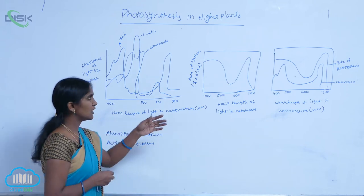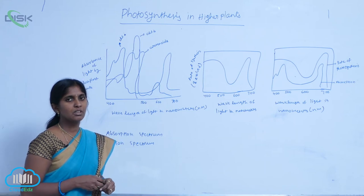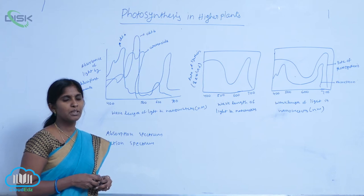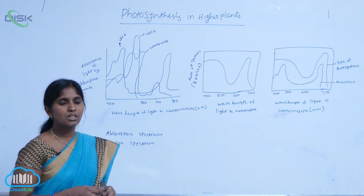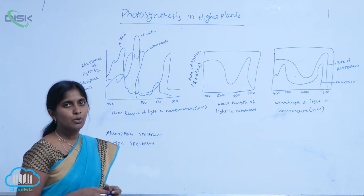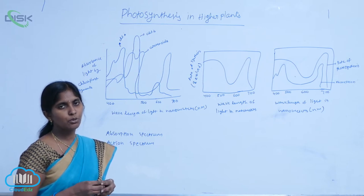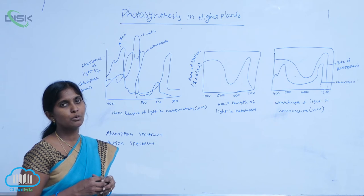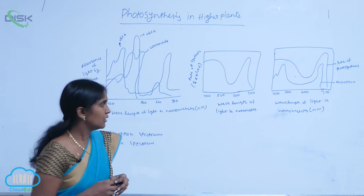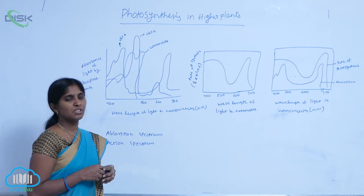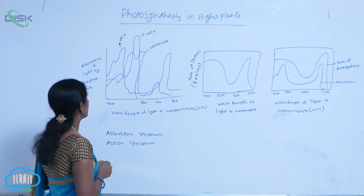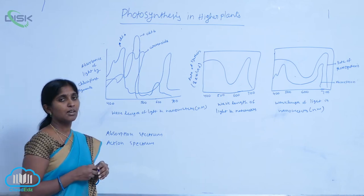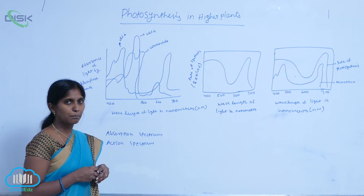Here you are seeing the graphical representations. The absorption of light by pigments causes the photosynthetic yield. It means the photosynthetic yield depends on the wavelength of the light which is absorbed by the pigments. Here, two graphical representations are shown — one is the graphical representation of absorption of light by pigments.